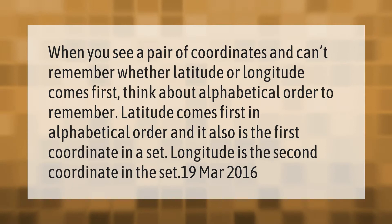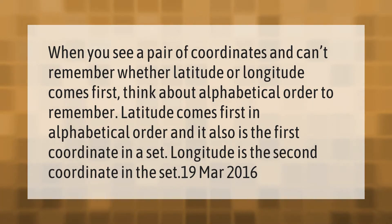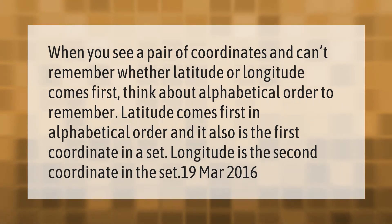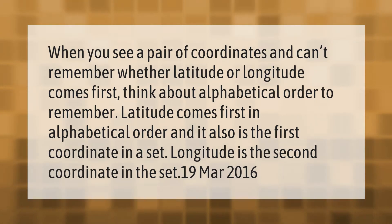When you see a pair of coordinates and can't remember whether latitude or longitude comes first, think about alphabetical order. Latitude comes first in alphabetical order, and it also is the first coordinate in a set. Longitude is the second coordinate in the set.